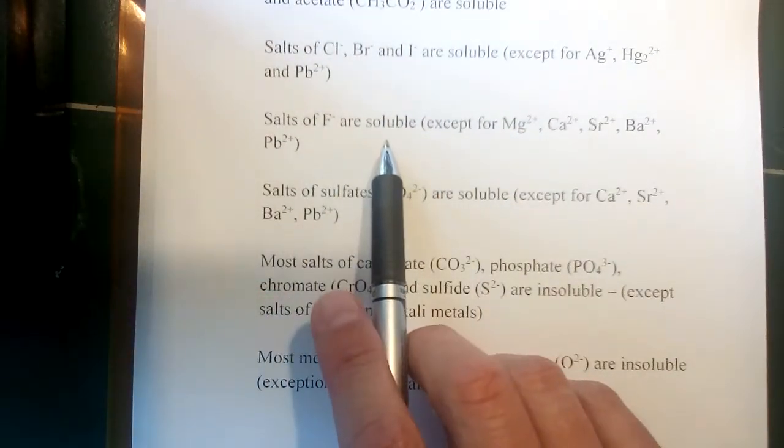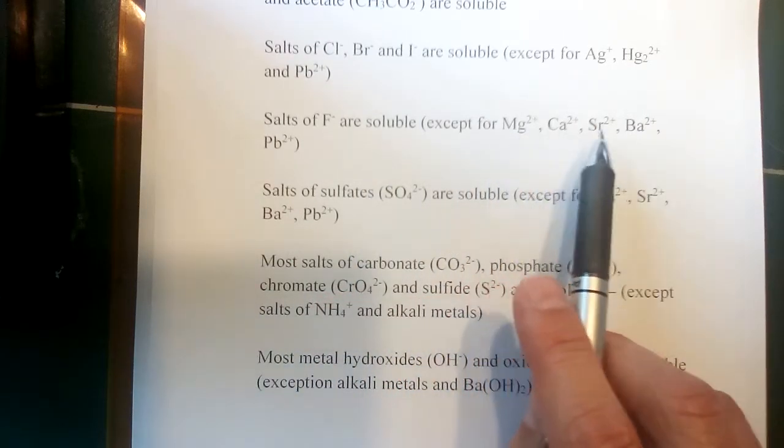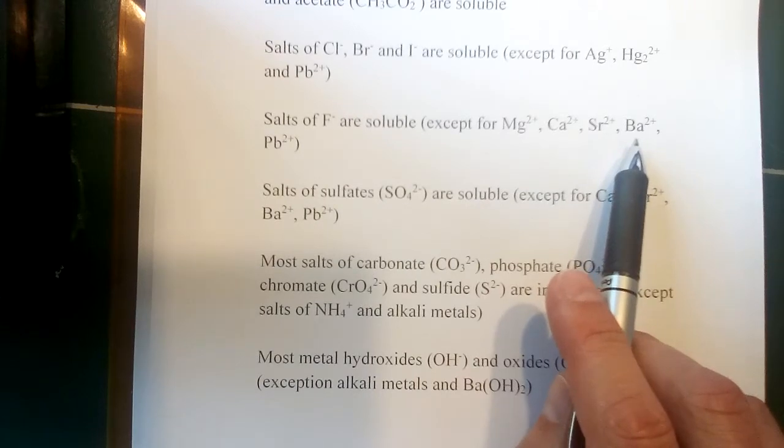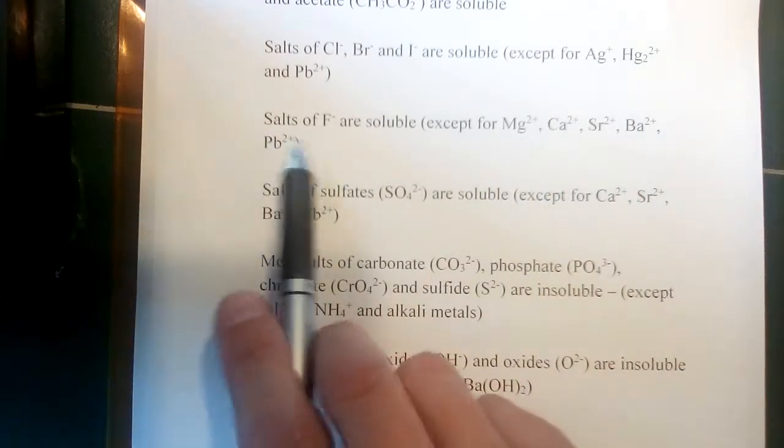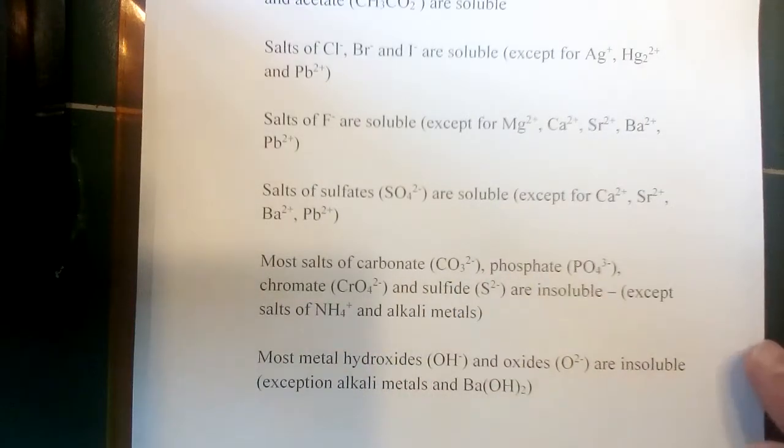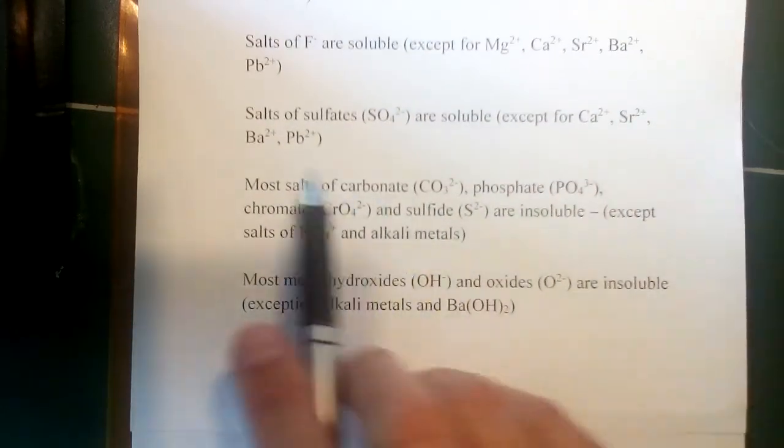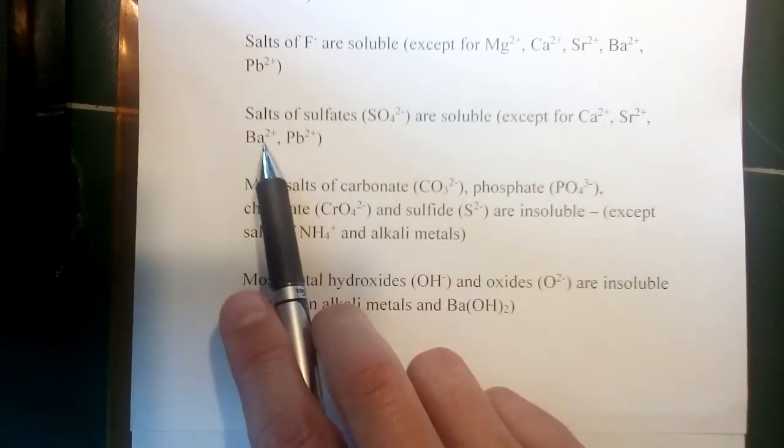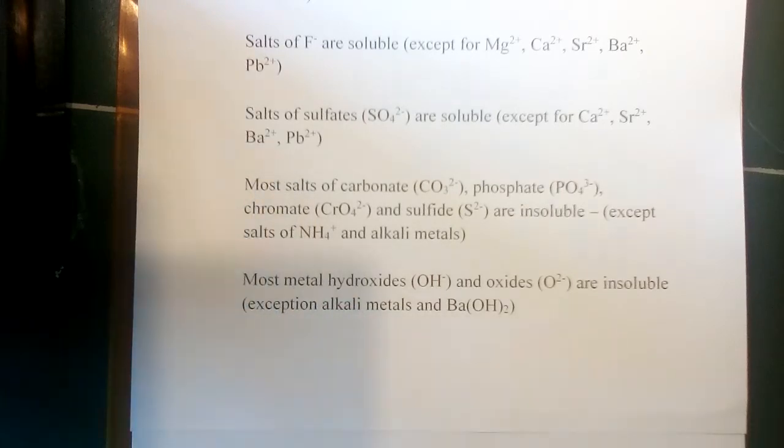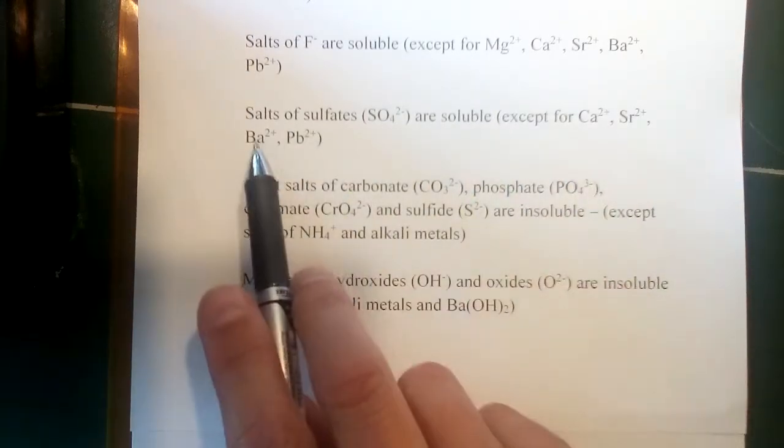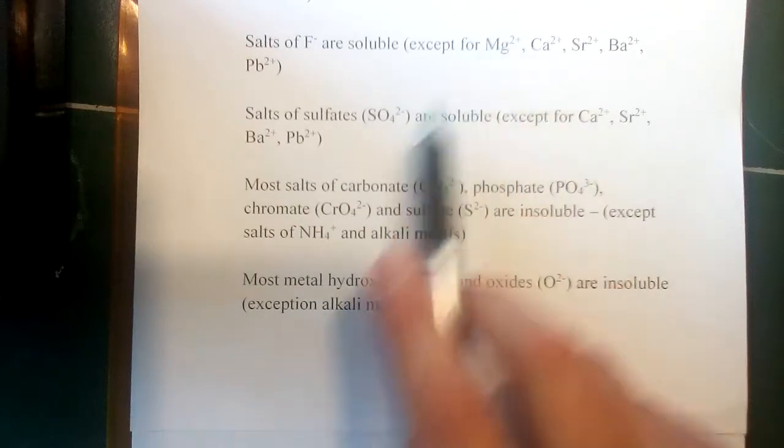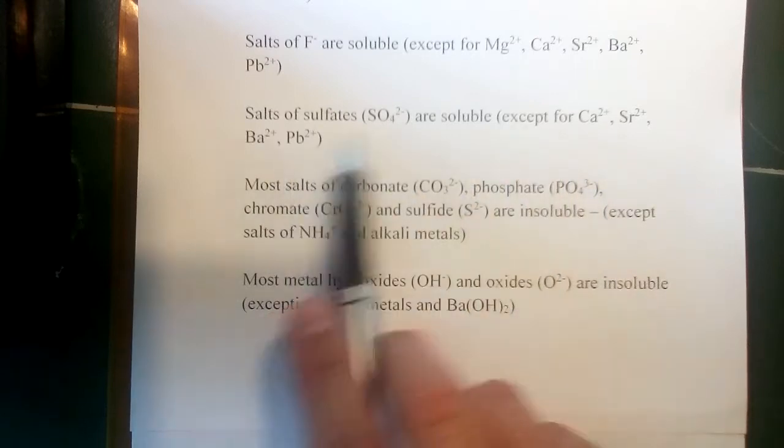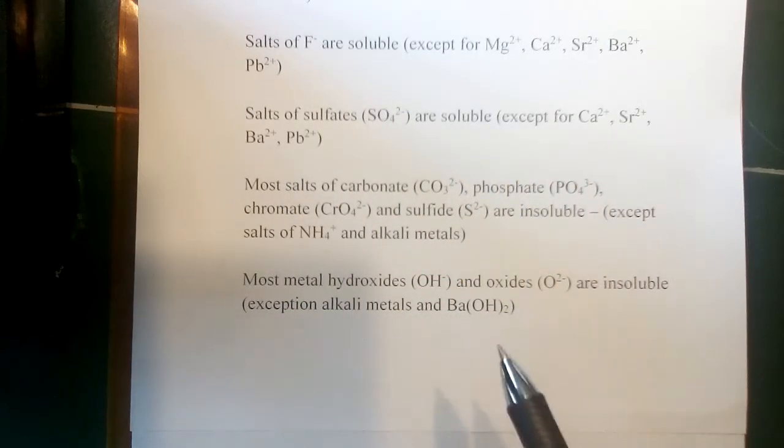Same is true for bromide and iodide - insoluble with silver, insoluble with mercury one, insoluble with lead two, soluble with any other cation. Salts of fluoride are soluble generally. The exceptions here: magnesium, calcium, strontium, barium, those are your column two metals other than beryllium, and lead two. Salts of sulfates are generally soluble. Exceptions here: calcium, strontium, barium, so those are the larger, further down cations in group two - notice magnesium was left out there - and also lead two.